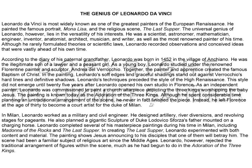Leonardo's techniques preceded the style of the High Renaissance, a style that did not emerge until 25 years after Leonardo opened his own studio in Florence. As an independent painter, he was commissioned to paint a church altarpiece depicting the three kings worshipping the baby Jesus, known today as the Adoration of the Three Kings. Although he spent considerable time planning an untraditional arrangement of the scene, he never finished the piece, and instead left Florence at the age of 30 to become a court artist for the Duke of Milan.